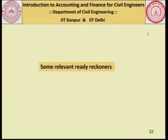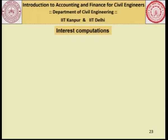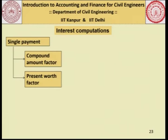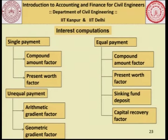Let us look at some ready reckoners — easy-to-use tools which help us do these calculations without a spreadsheet. For a single payment, we want to know the compound amount factor and the present worth factor. For equal payments, we want the compound amount factor, present worth factor, sinking fund deposit, and capital recovery factor. For unequal payments, we are interested in the arithmetic gradient factor and the geometric gradient factor.